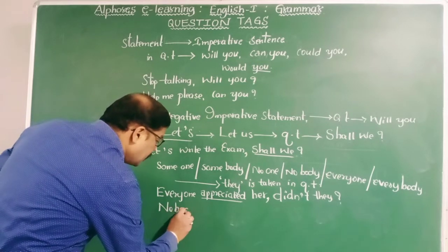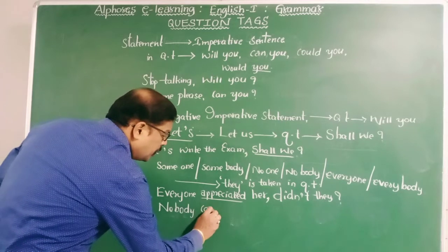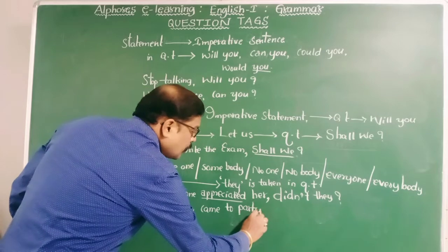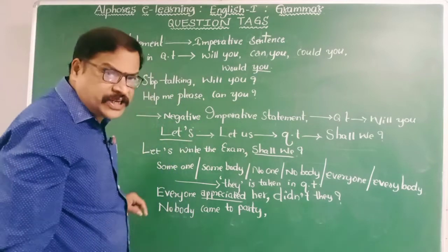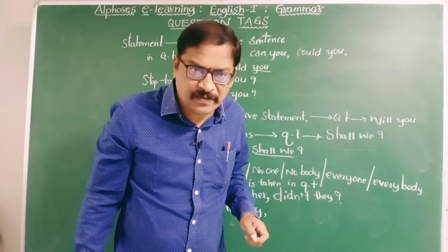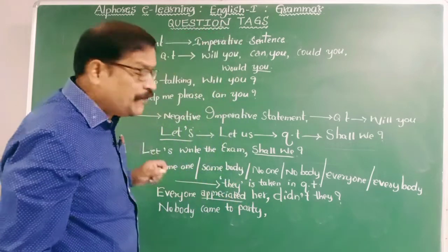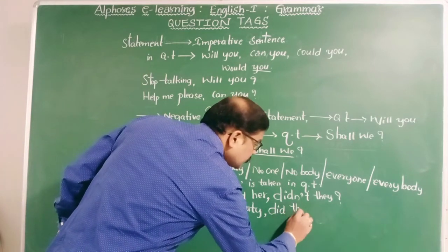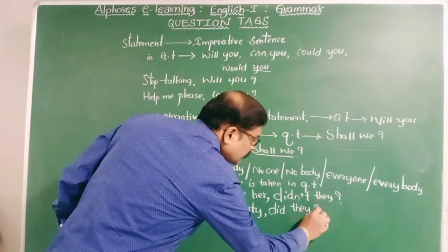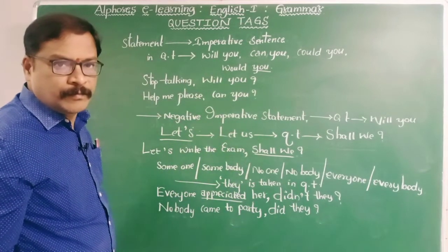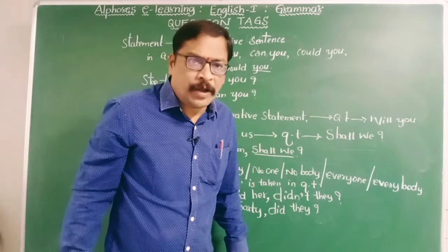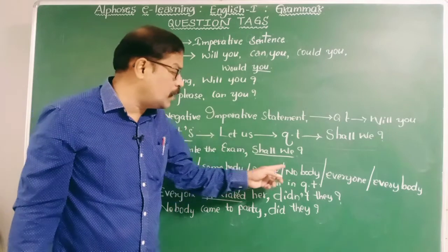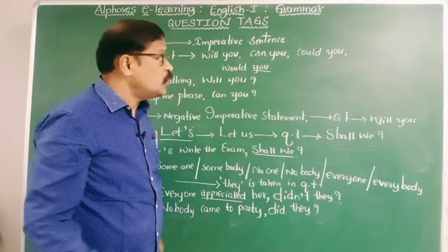Nobody came to the party. Nobody indicates a negative sense, therefore the tag will be positive: did they? So for someone, somebody, no one, nobody, everyone, everybody — they is taken in the question tag.